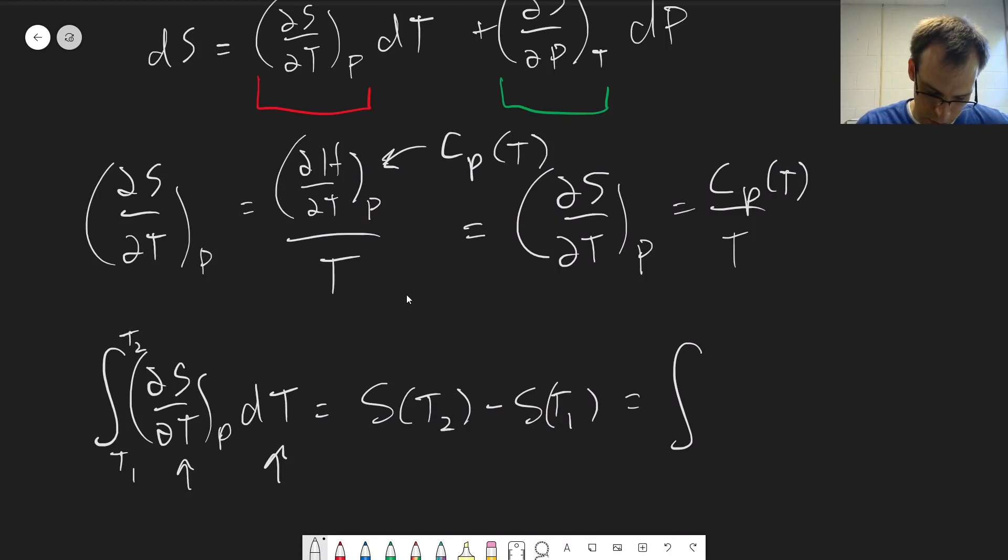So S at T2 minus S at T1 is equal to the integral. We can make the substitution here that this is Cp. Again, emphasizing that this is not constant. So we need to define that Cp has a temperature dependence. And we need to measure that. That's the measurement we need to make is what's the constant pressure heat capacity as a function of temperature.